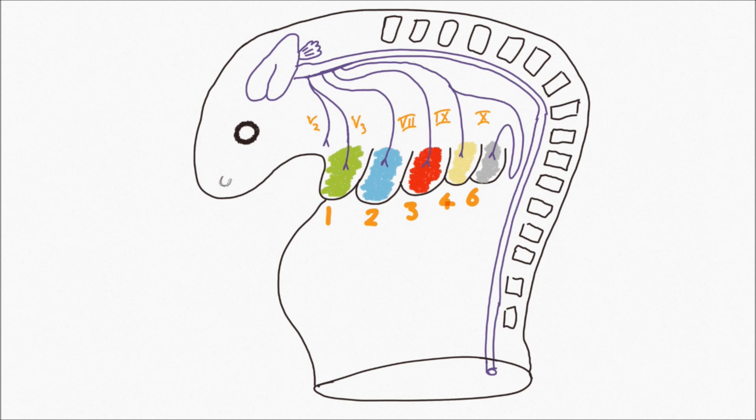The second pharyngeal arch is supplied by the facial nerve. Therefore, the muscles derived from it are the muscles of facial expression. Associated skeletal structures are also derived from the relevant pharyngeal arch mesenchyme.